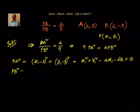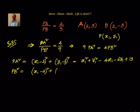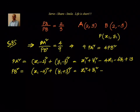Similarly, PB squared: P is (x1, y1) and B is (2, -3). So PB squared will be (x1 - 2)² + (y1 - (-3))², which is (x1 - 2)² + (y1 + 3)² because minus of minus 3 is plus 3. Again we will have x1² + y1² - 4x1 + 6y1 + 4 + 9 = 13.